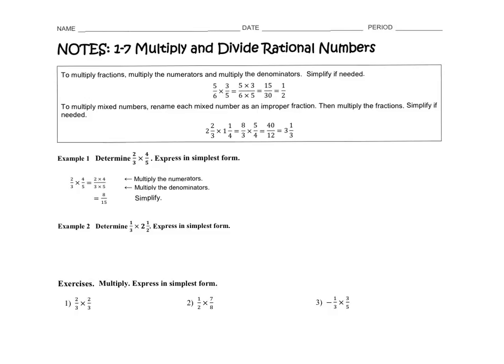So, notes 1-7, multiply and divide rational numbers. We're going to talk about fractions, multiplying and dividing fractions. We kind of did multiplying and dividing integers about a week and a half ago, but we're going to dive deeper into this. So when it talks about multiplying fractions, you multiply the numerators and multiply the denominators, and then you simplify if needed.